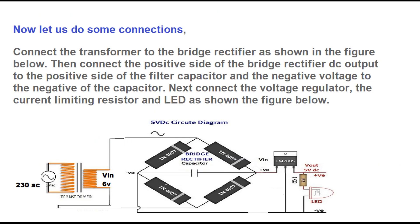Now let us do some connections. Connect the transformer to the bridge rectifier as shown in the figure. Then connect the positive side of the bridge rectifier DC output to the positive side of the filter capacitor and the negative voltage to the negative of the capacitor. Next, connect the voltage regulator, the current limiting resistor, and LED as shown in the figure.